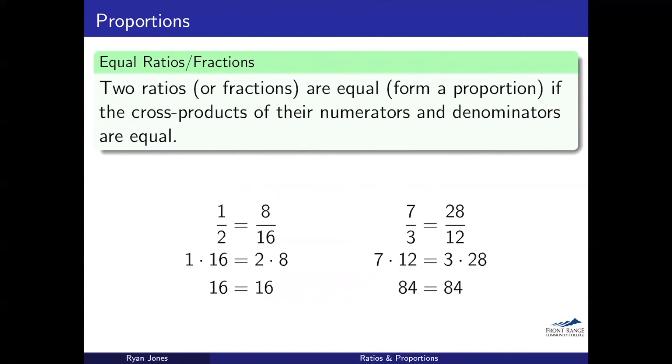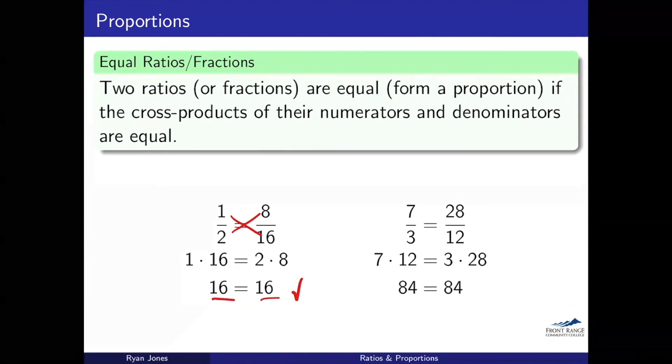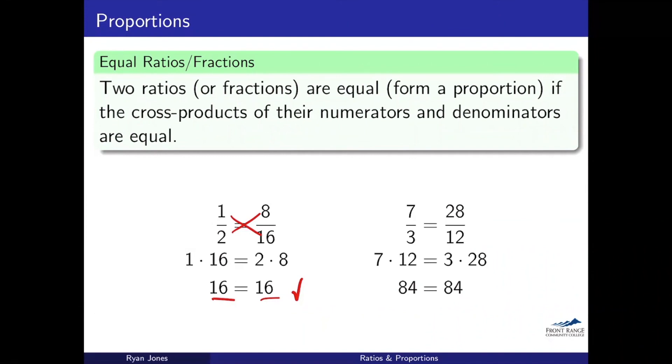So let's go ahead and do an example here. If you look at one half and eight over 16, you can probably tell right off the top of your head that those are the same because eight over 16 is just one half if you simplify it down. But if we want to check this, we could just do a cross product. And so I have one times 16 and two times eight and I get 16 and 16. Those are the same. So this one half is in fact equal to eight over 16. And now if we look at this seven over three equaling 28 over 12, and we want to check if those are the same or not, then we're going to just do our cross product. So we'll have seven times 12 and that's going to equal 84. And then we'll have three times 28 and that's also going to equal 84. So the 84 is the same. So we know in fact that seven thirds is equal to 28 over 12.